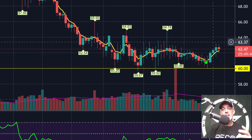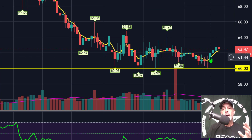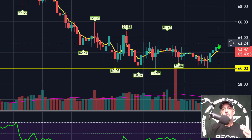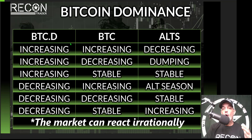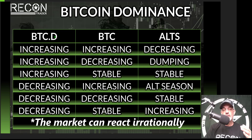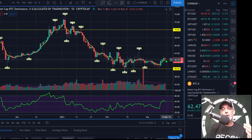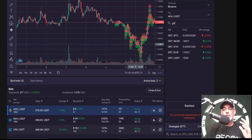Jumping back to the Bitcoin Dominance chart, during this recent push to Bitcoin all-time highs — these are daily candles — Bitcoin dominance started to increase. What happened? Altcoin prices started to decrease. That's exactly what you saw when you had alts paired with BTC as the quote currency: you were in a losing position. We saw BTC dominance increasing, BTC price increasing, and therefore the alts were decreasing. Now the dominance is starting to pull back a little and we are starting to see altcoins pick up.